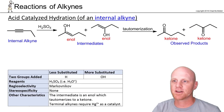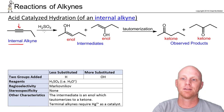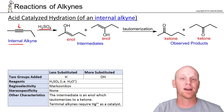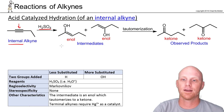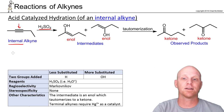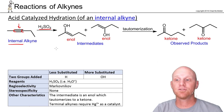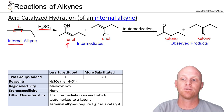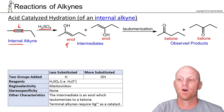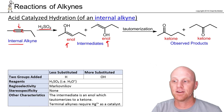Now let's look at acid-catalyzed hydration for an internal alkyne, where the carbon-carbon triple bond is not at one of the ends of the molecule. In this case, mercury is not needed — we just use aqueous H2SO4 or H3O+. You're actually going to get a couple of different enols, because with an internal alkyne both sp-hybridized carbons are equally substituted. So the H and OH could go either way, giving you one enol if OH adds on the left, or another enol if OH adds on the right.